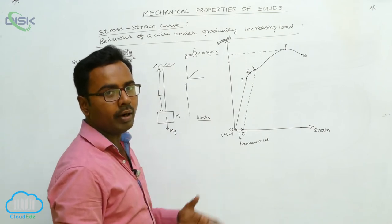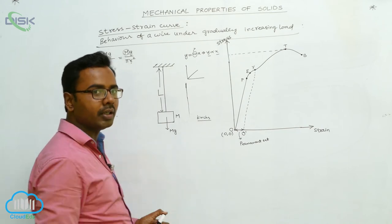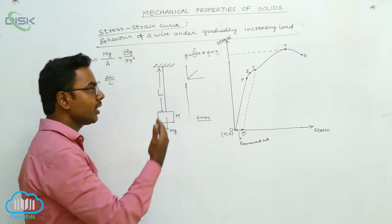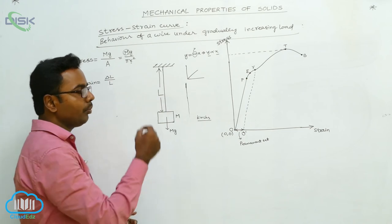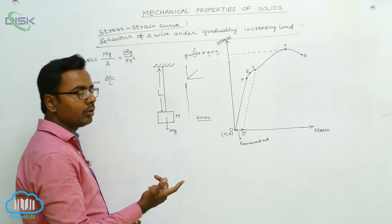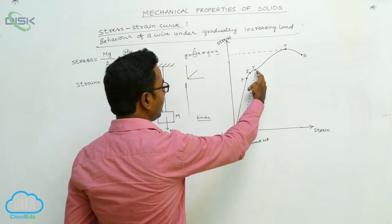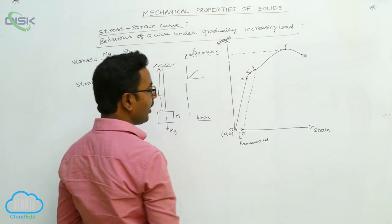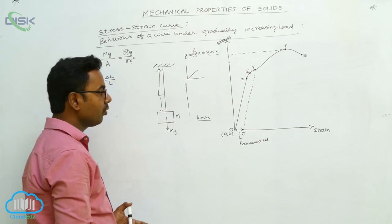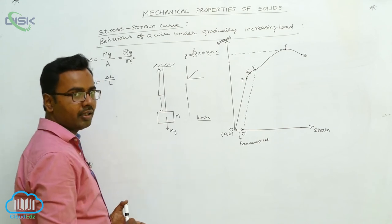Point Y is called the yielding point because at Y the yielding of the wire starts — the wire becomes thin and thin. At point Y if you remove the load, the graph cannot come back along the path Y-E-P-O; it comes back along a different line and intersects the strain axis at point O dash. O-O dash is called the permanent set.